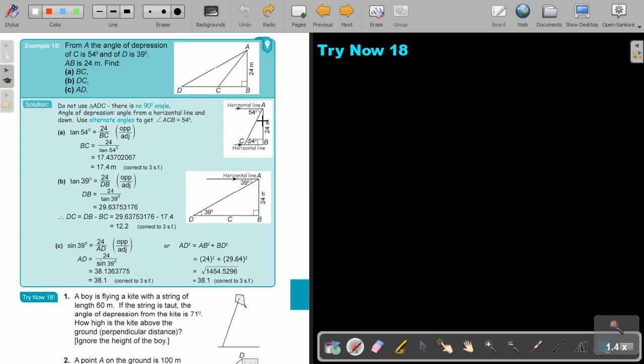BC. So first, I'm going to work in this one. So if I want to find BC, let's quickly see what I'm going to do. Do not use triangle ADC. There is not a 90 degree in it. So don't work in that triangle. Angle of depression is angle from a horizontal line and down. Use alternate angles to get angle ACB. So if that is 54, that one will be 54.